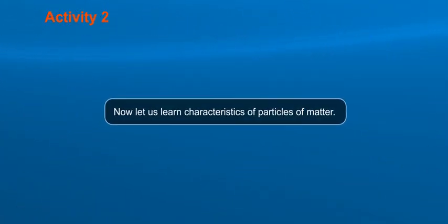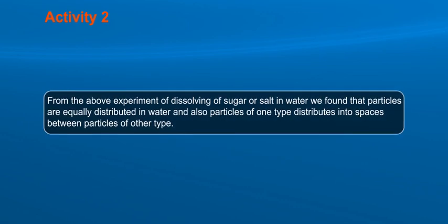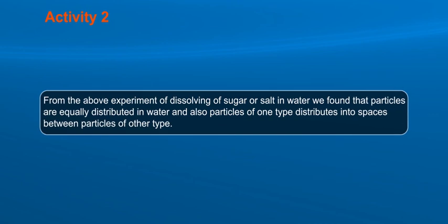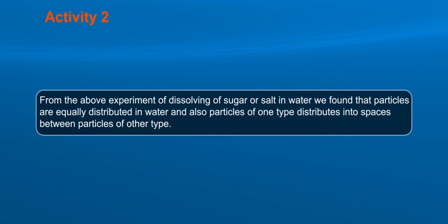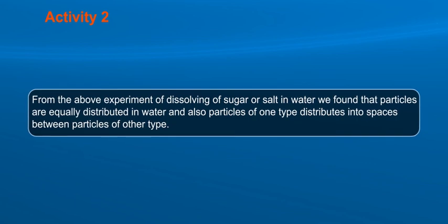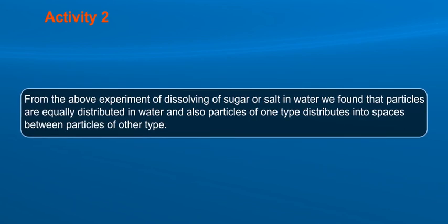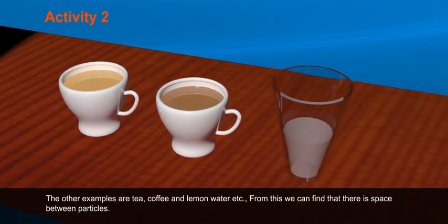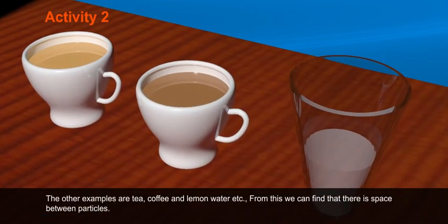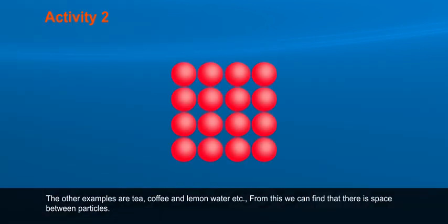Now let us learn characteristics of particles of matter. From the above experiment of dissolving of sugar or salt in water, we found that particles are equally distributed in water and also particles of one type distributes into spaces between particles of other type. The other examples are tea, coffee and lemon water. From this, we can find that there is space between particles.